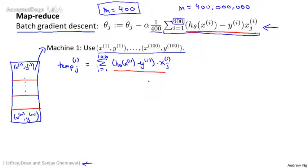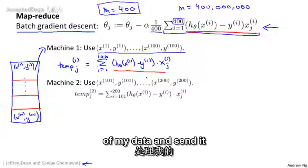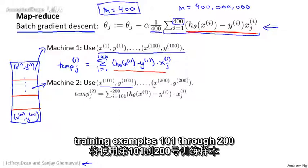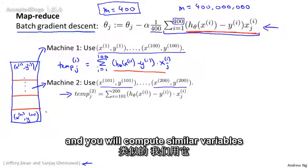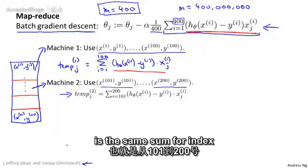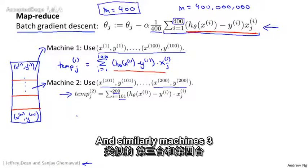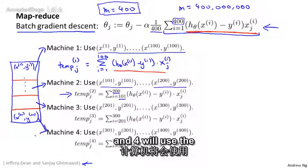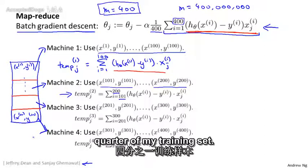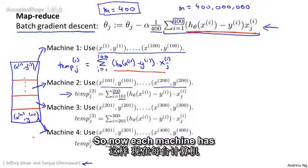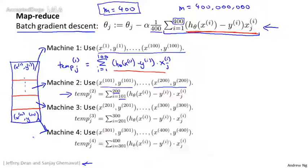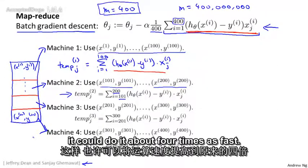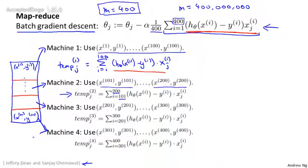Similarly, I'm going to take the second quarter of my data and send it to my second machine. My second machine will use training examples 101 through 200 and compute temp2j, which is the same sum but indexed from examples 101 through 200. Similarly, machines three and four will use the third quarter and the fourth quarter of my training set. Each machine has to sum over 100 instead of over 400 examples, so it has to do only a quarter of the work, and thus can presumably do it about four times as fast.